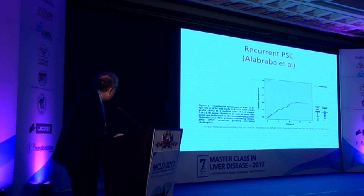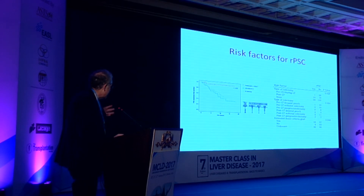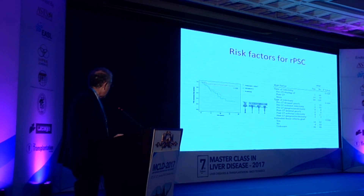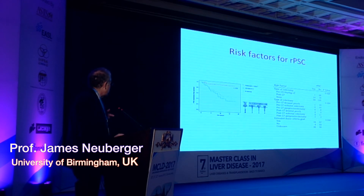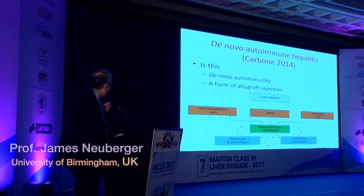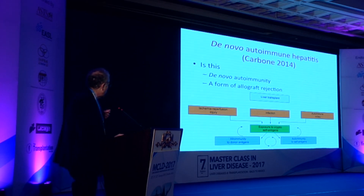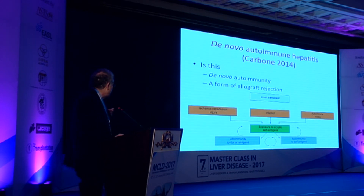For recurrent PSC, there's a similar increase in the number of patients, but not all get it. The major risk factor — somewhat controversial but confirmed by several groups — is that the presence of an intact bowel at the time of or preceding liver transplantation is associated with a complete or very great reduction in the risk of recurrent PSC. This emphasizes the importance of the circulation of lymphocytes between the bowel and the liver. De novo autoimmune hepatitis after transplantation raises the question of whether this is truly de novo autoimmunity or a form of allograft rejection.